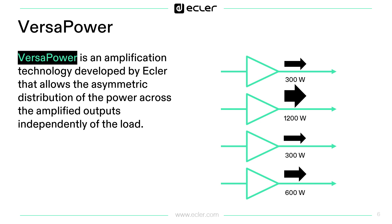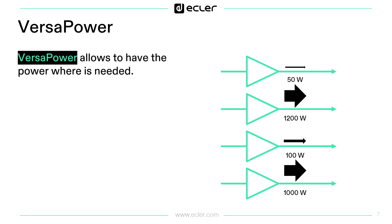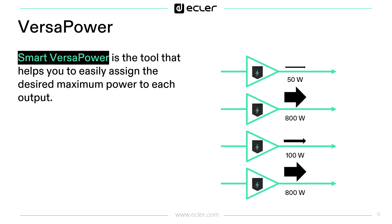In the example, we have 1200W in the second channel and the rest of the power distributed in other channels. The power will be delivered on demand. SmartVersaPower is the tool that helps you easily assign the desired maximum power to each output channel, so you can be sure this value will not be exceeded.